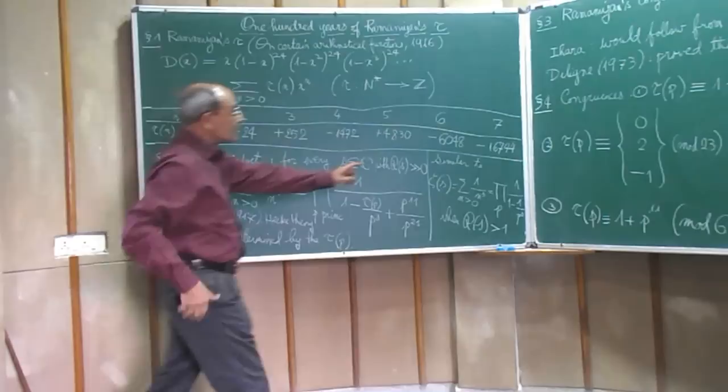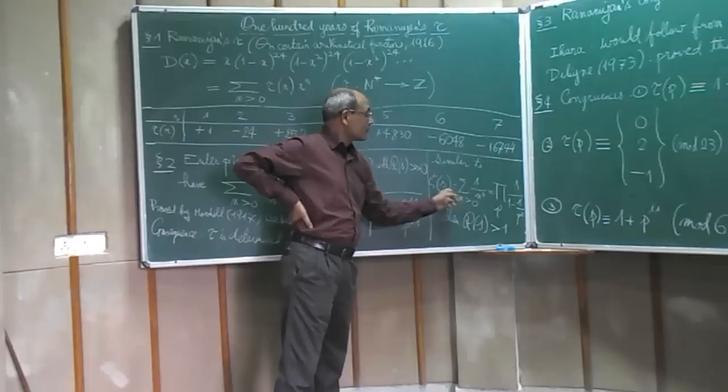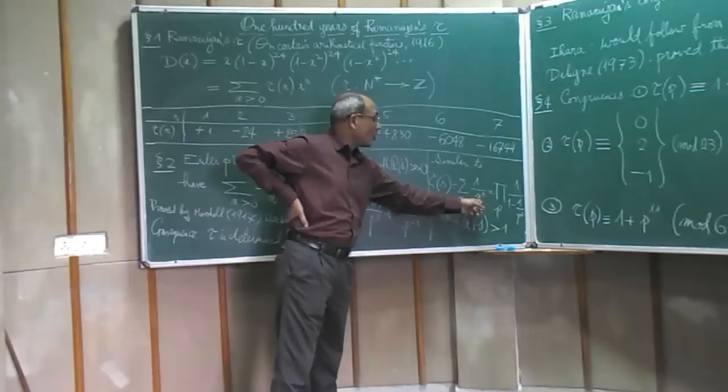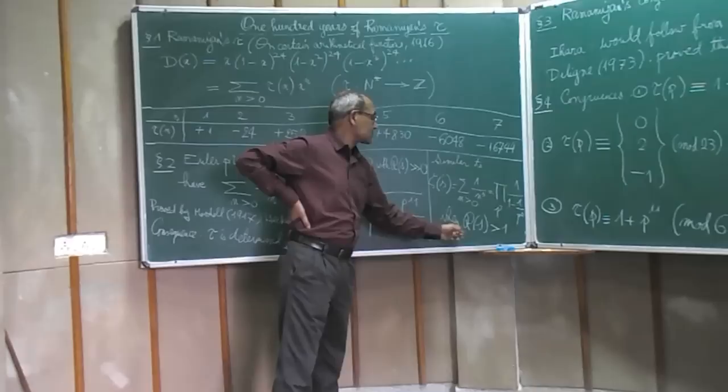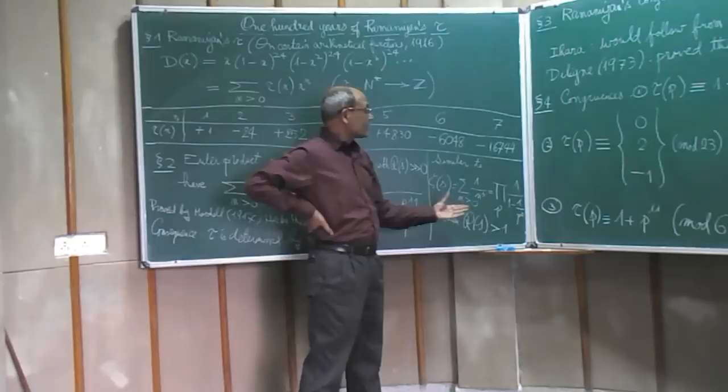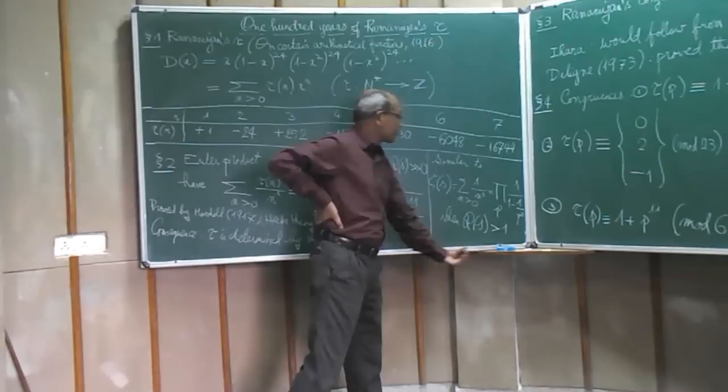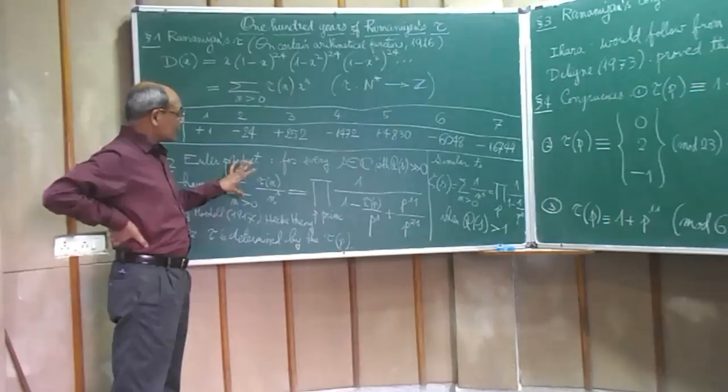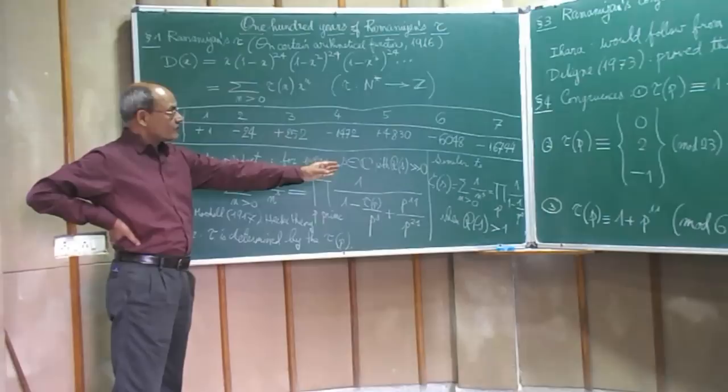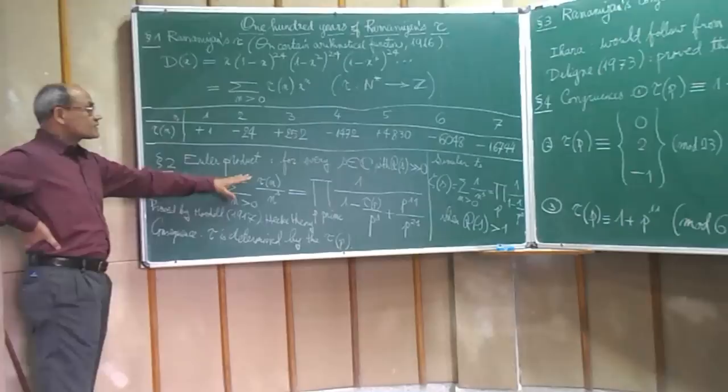So this is somewhat similar to the product that Euler found for what is called Riemann's zeta function. The zeta function is defined as the sum over all natural numbers n of 1 over n to the s, where s is some complex number with real part strictly greater than 1. And Euler proved that this sum is actually equal to this product over all prime numbers. So the product formula for Ramanujan's tau function is somewhat similar to Euler's product formula for the Riemann zeta function.